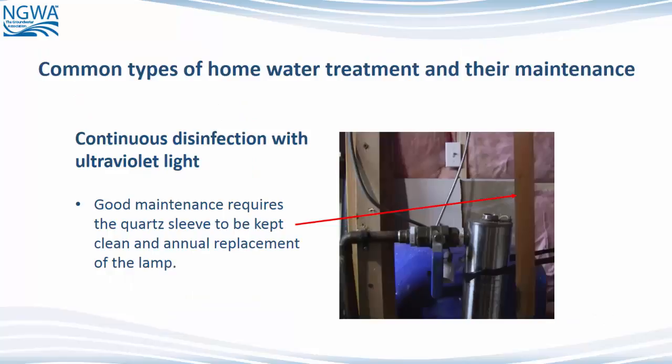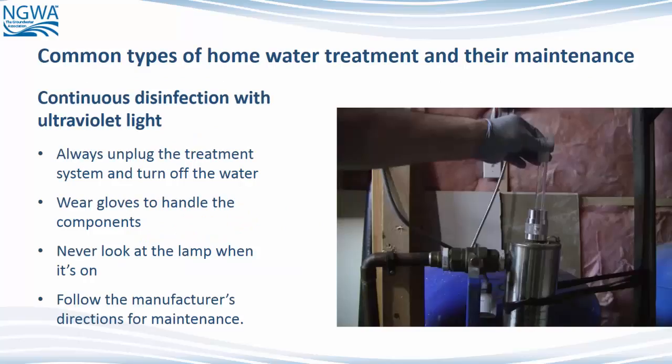Good maintenance requires the quartz sleeve in which the lamp is enclosed to be kept clean, and good maintenance requires annual replacement of the lamp. When performing maintenance on a UV light system, always unplug the treatment system and turn off the water. Wear gloves to handle the components. Never look at the lamp when it's on, and follow the manufacturer's directions for maintenance.